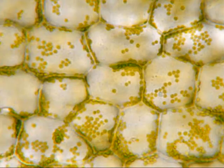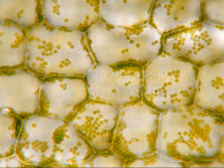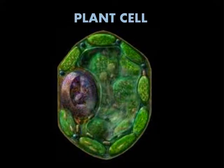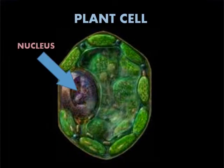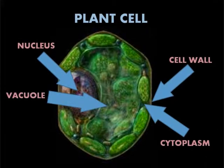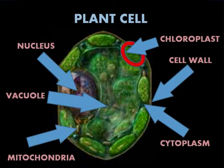Before we jump into the structure of chloroplasts themselves, we should first find where they are located. Since they are found in plant cells, it would be wise to explore the parts of a plant cell first. The main parts of the cell are the nucleus, the cell wall, the cytoplasm, the vacuole, the mitochondria, and finally the chloroplasts, which we will explore further.